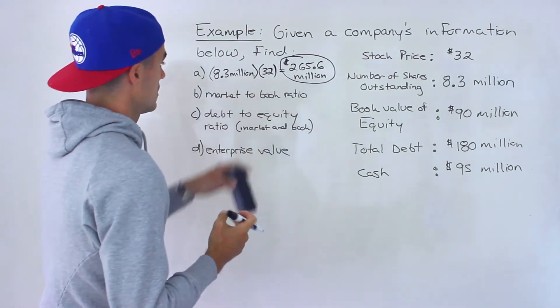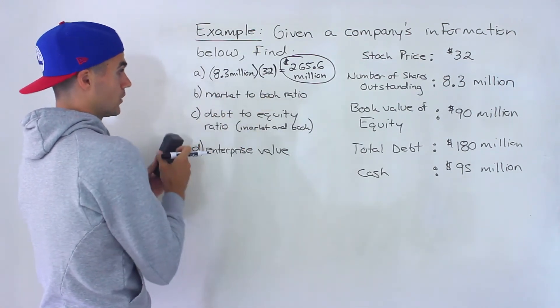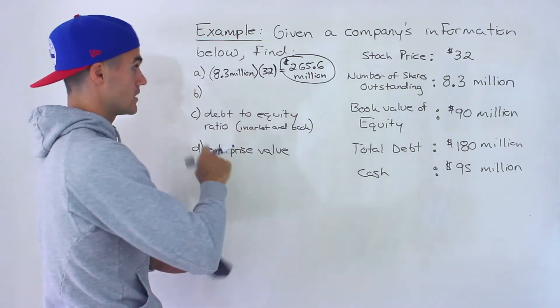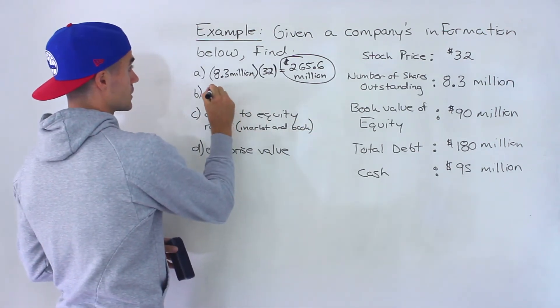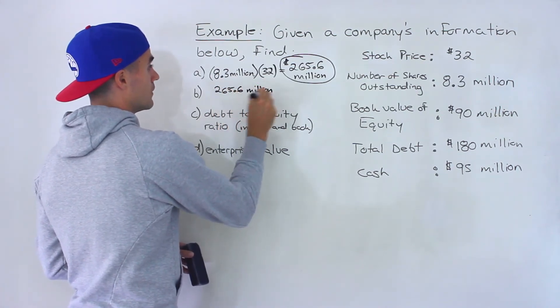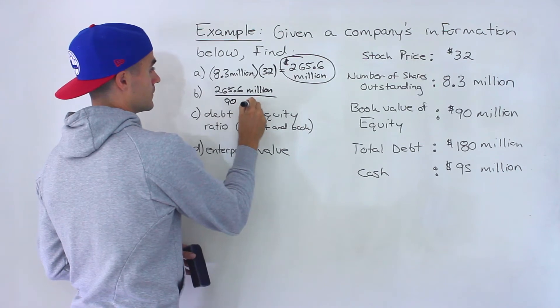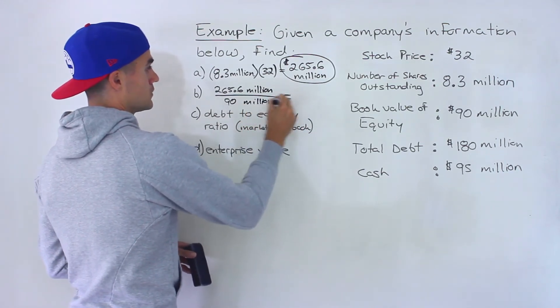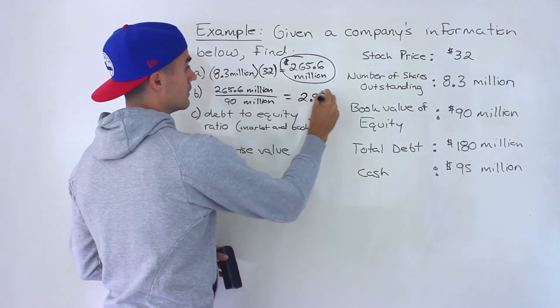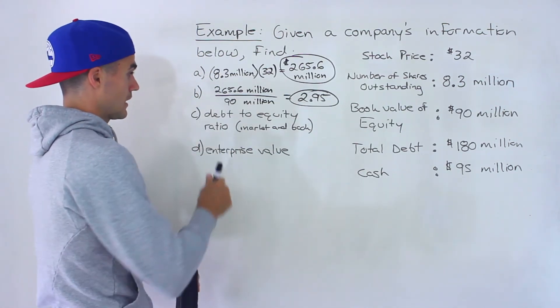And we're actually going to be using this quite a lot in the next couple of things we're going to calculate. So notice the market to book ratio. That's basically the market value of the equity divided by the book value of the equity. So we're going to take 265.6 million dollars and divide it by 90 million dollars. And when you do that, the millions will cancel out. 265.6 divided by 90, that would give you 2.95. So that's what the market to book ratio is going to be.